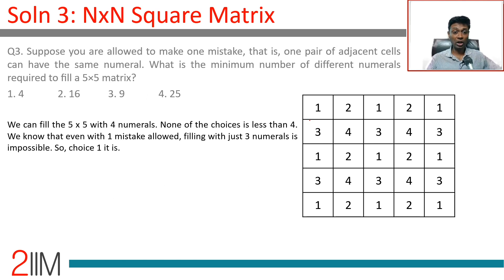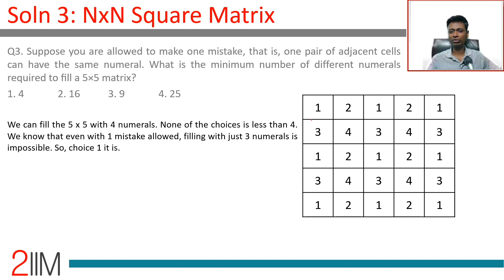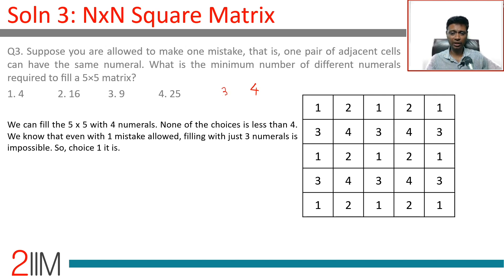Suppose you're allowed to make one mistake — that is, one pair of adjacent cells can have the same numeral. What is the minimum number of different numerals required to fill a 5×5 matrix? Without any errors the answer is four, so with one error maybe we can do it with three.